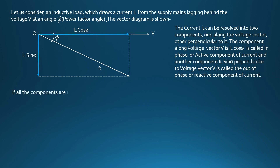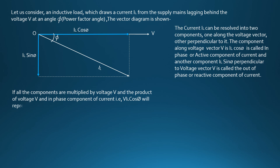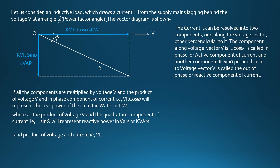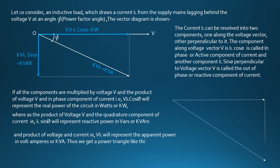If all components are multiplied by voltage V, the product of voltage V and the in-phase component of current — that is, V × IL cos phi — represents the real power of the circuit in watts or kilowatts. Whereas the product of voltage V and the quadrature component of current — V × IL sin phi — represents reactive power in VARs or KVAR. Thus we get a power triangle, from which cos phi equals KW divided by KVA.